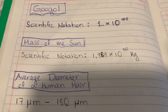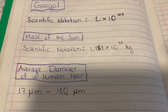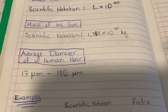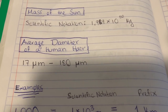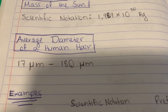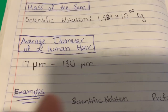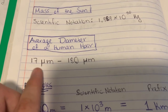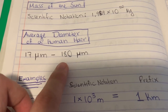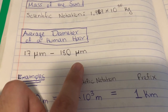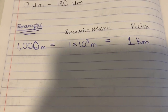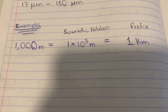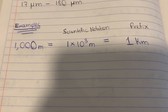For example, the googol written in scientific notation, and the mass written also in scientific notation. The average diameter of a human hair written with a prefix — this symbol standing for micro — so 17 micrometers to 180 micrometers. We also have an example of how both methods work and they stand for the same thing.